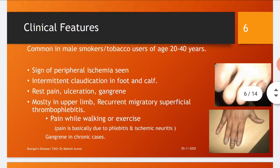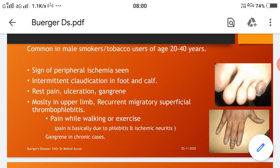Recurrent migratory superficial thrombophlebitis is mostly seen in the upper limbs. Pain while walking or exercise is a common complaint. The pain is basically due to phlebitis and ischemic neuritis. Gangrenous changes and tissue death are seen in chronic cases.